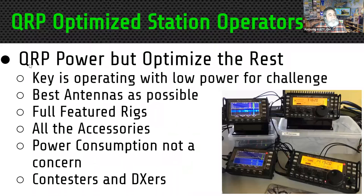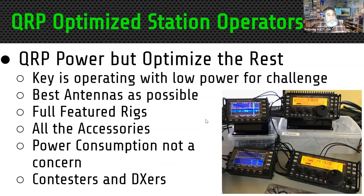The last group is 'QRP power' — five watts or less but optimized everything else. This group has no problem using five watts with the best possible antennas, towers, and beams, using full-featured radios and all accessories. Power consumption is not a concern — only the output power matters. A lot of these operators like to contest and DX. I put myself in this category as my main mode of operation, although I do build some things and operate portable. I prefer to use optimized radios like the KX3 or K2.